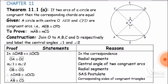Side OB is congruent to OD because both are radial segments of the same circle. We have now shown two sides and the included angle of both triangles are equal, so by the Side-Angle-Side (SAS) postulate, triangle OAB is congruent to triangle OCD. Since both triangles are congruent, the corresponding sides AB and CD are also equal, proving that if two arcs of a circle are congruent, their corresponding chords are equal.